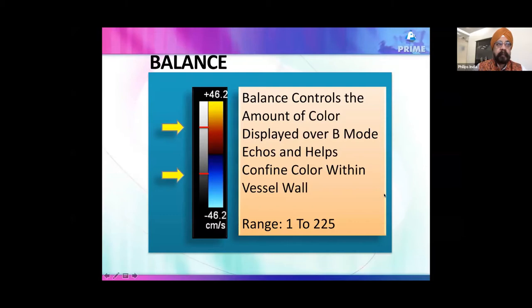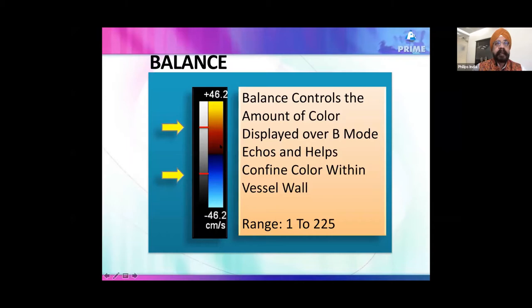There are a few things you should know when trying to improve equipment resolution. One is called 'balance' or 'priority' in Philips equipment. Priority means: you have a color display and a 2D scale, and you decide what priority to give to 2D. If you give priority to 2D, the 2D data overrides the color data. If you give priority to color, the color data dominates, since both are superimposed when displayed.